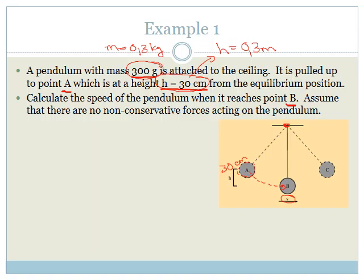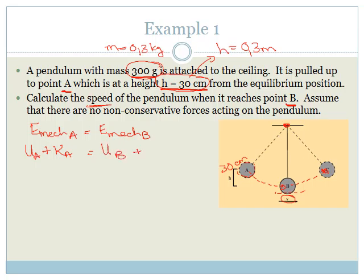It says calculate the speed of the pendulum when it reaches point B. Point B is at the bottom of its swing — you can see it starts swinging back up to point C after point B. Let's use the conservation of mechanical energy. There are no non-conservative forces, so mechanical energy is conserved. The total mechanical energy at A equals the total at B: potential energy at A plus kinetic energy at A equals potential energy at B plus kinetic energy at B.